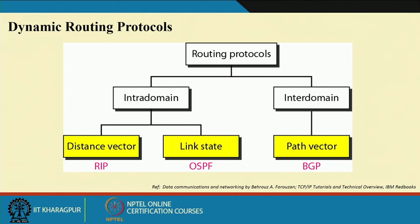We will be continuing from the last class looking at intra-domain routing. Today we will look at two primary categories of intra-domain routing: distance vector and link state protocols. One very popular distance vector protocol is RIP — the Routing Information Protocol — and for link state, there is the OSPF protocol.